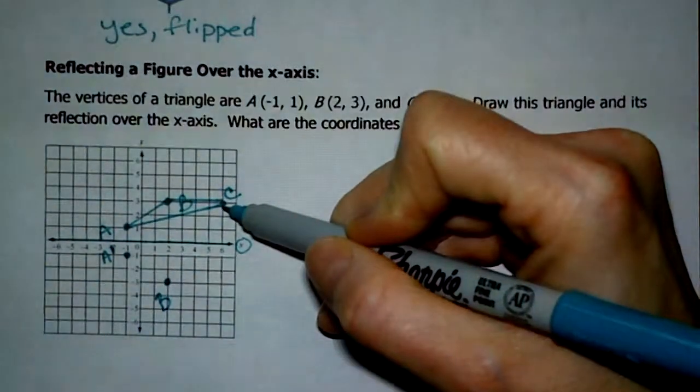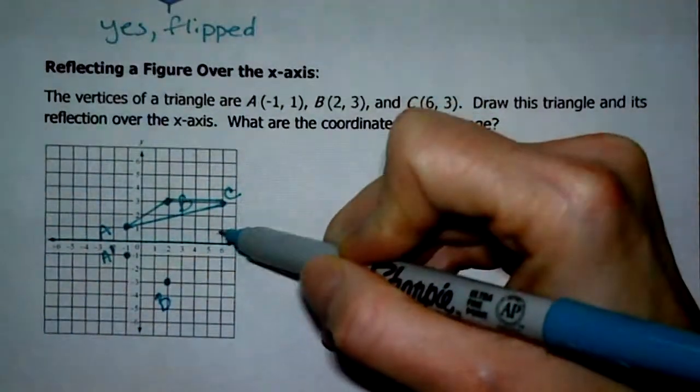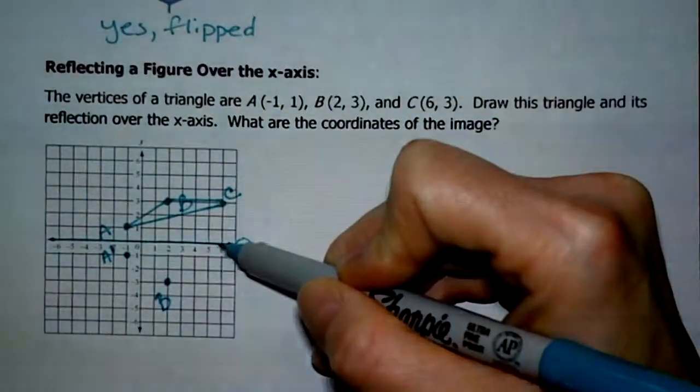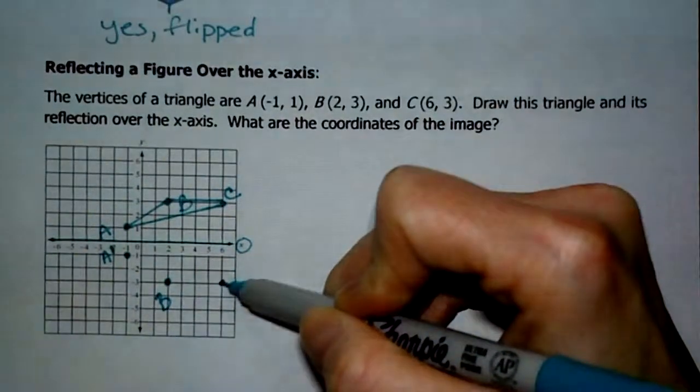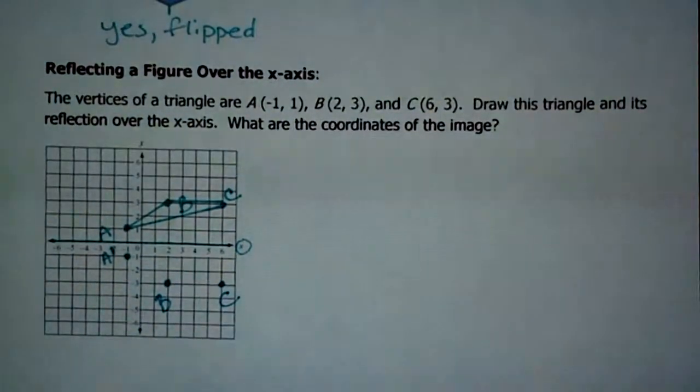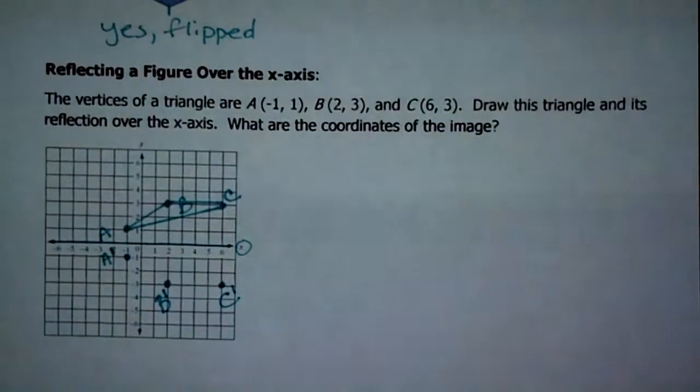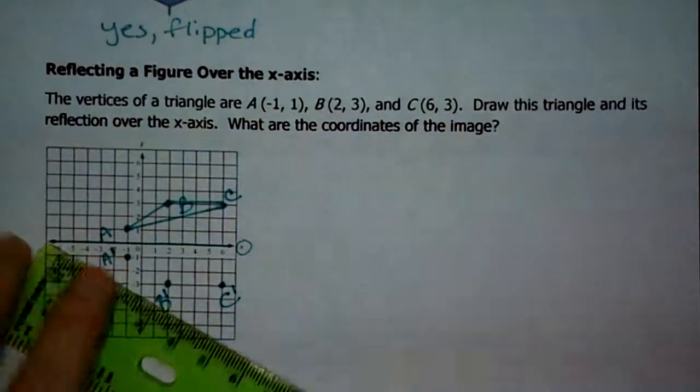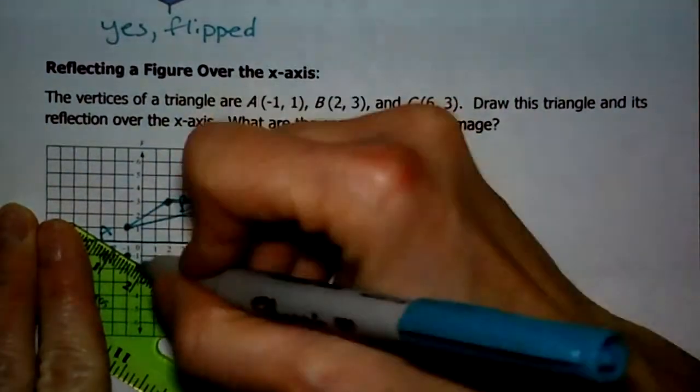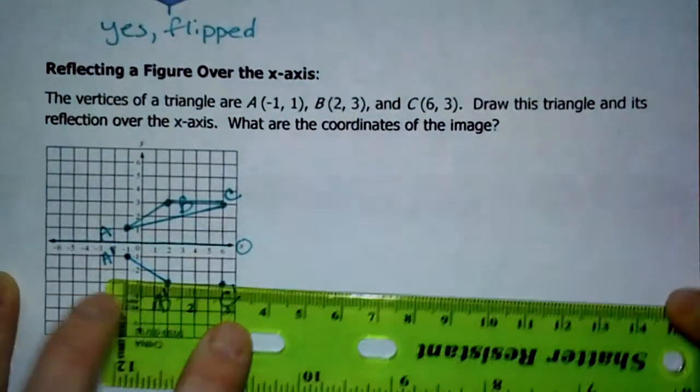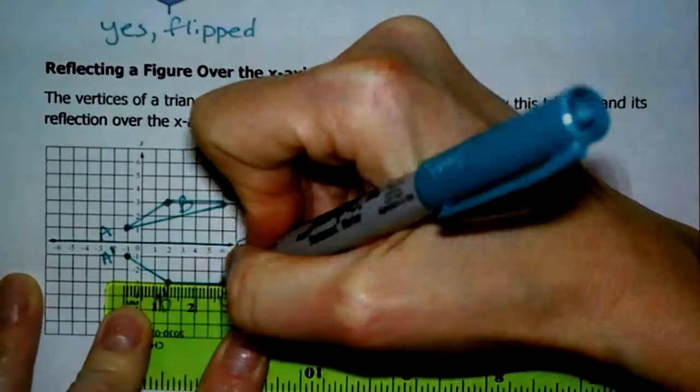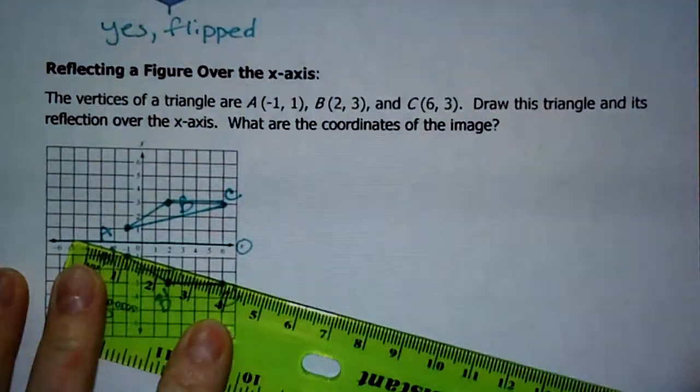Here's C. C is 1, 2, 3 away. So we're going to go 1, 2, 3 away. All right. I forgot to put my little prime symbols. Hopefully you didn't. You caught it. Mrs. Trombley made a mistake. I know. It happens every once in a while, huh? More often than that.